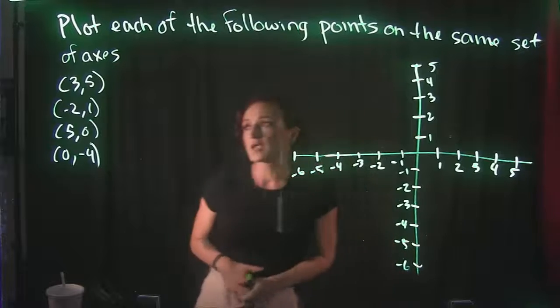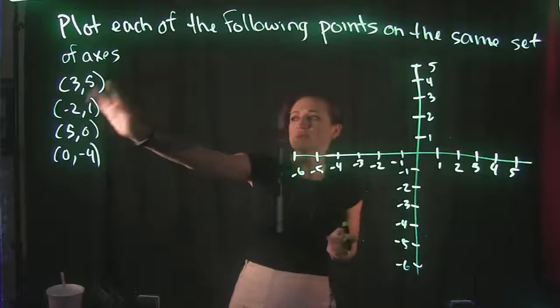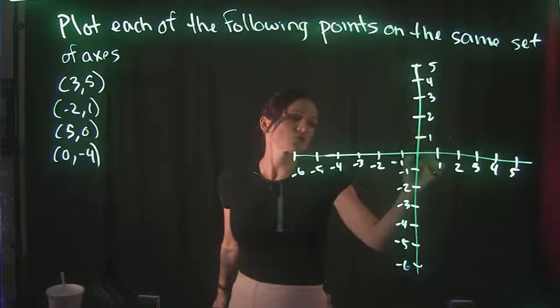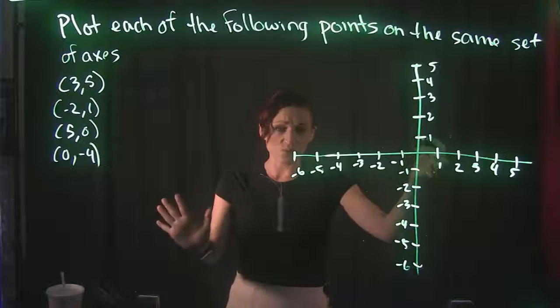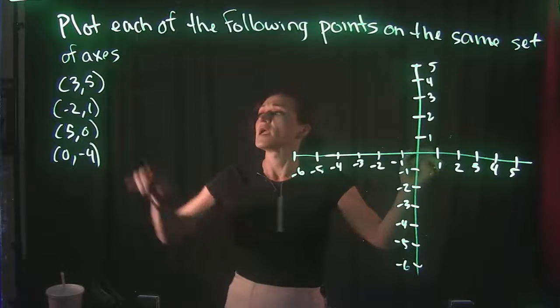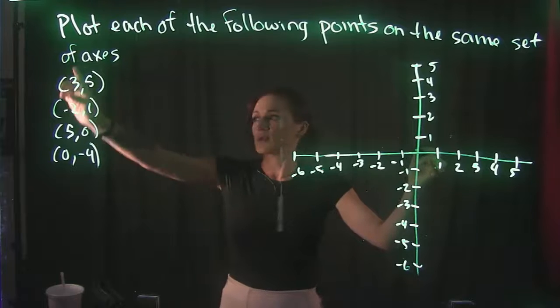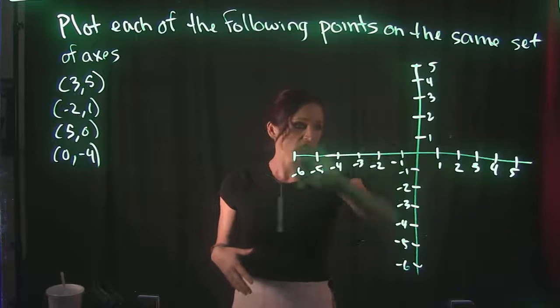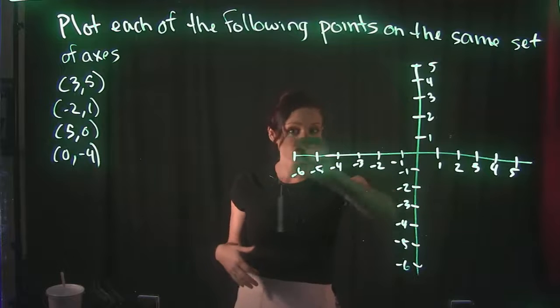Alright, so when it comes to plotting points, starting with our first point here, we have a positive 3 and a positive 5. So we're going to start at the origin—that is always our starting point in plotting a point. And we have a positive 3. So again, remember, the first point is our x value, and our x axis runs left to right.